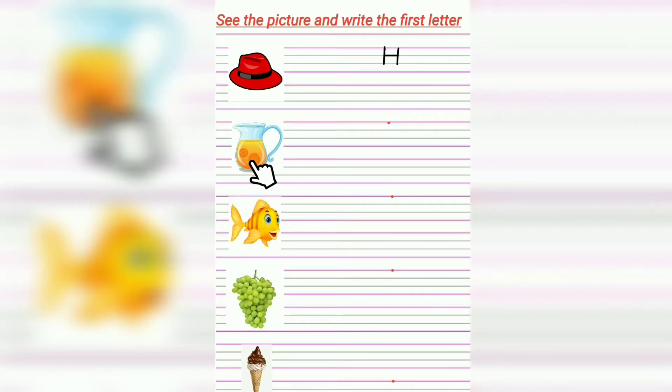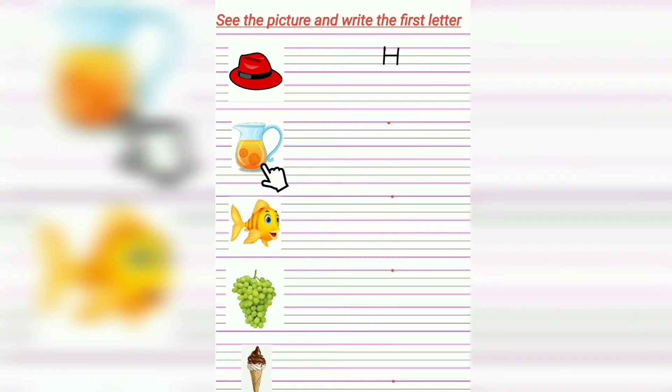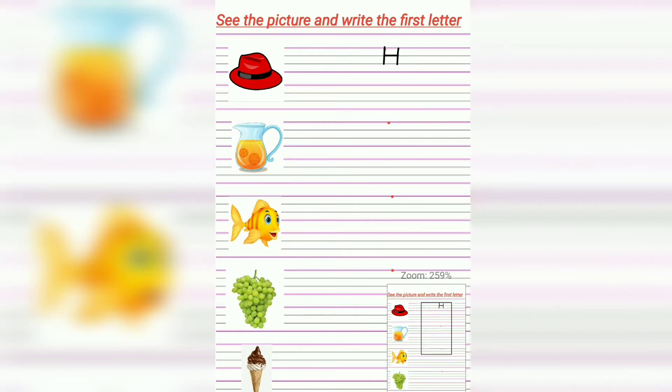This is Jack. Jack starts with alphabet J. So write here alphabet J.